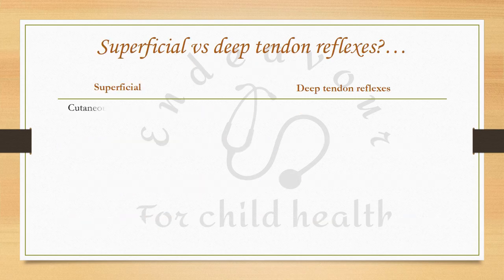Superficial reflexes involve stimulating a superficial surface of the body, such as the skin or superficial mucosa in the case of corneal, conjunctival, and pharyngeal reflexes. Deep tendon reflexes are called deep because they are elicited by stimulating deeper structures, i.e. the muscles and tendons.